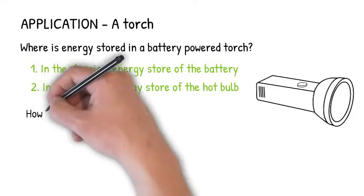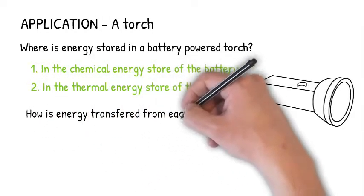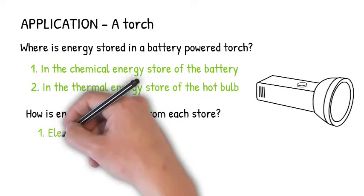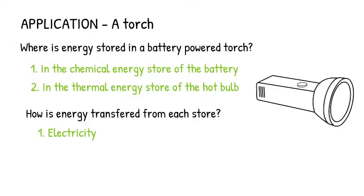So how do you think the energy is transferred from each of these energy stores? It is transferred from the battery by electricity, it is transferred from the hot bulb to the surroundings by heating and also as waves in the form of light.